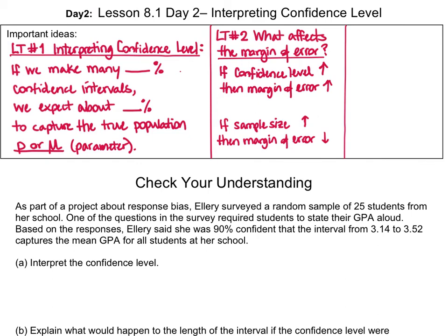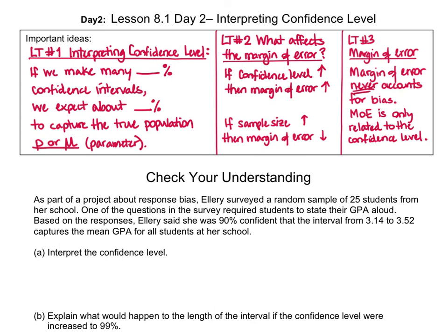The third learning target is to explain how practical issues like non-response, under-coverage, and response bias — all of which we learned about in Chapter 4 — can affect the interpretation of a confidence interval. Even though it's called margin of error, it doesn't really have anything to do with error or doing something wrong. When data collection is not well designed, it introduces bias, and margin of error has nothing to do with bias. It's only related to the width of the confidence interval based on the confidence level.